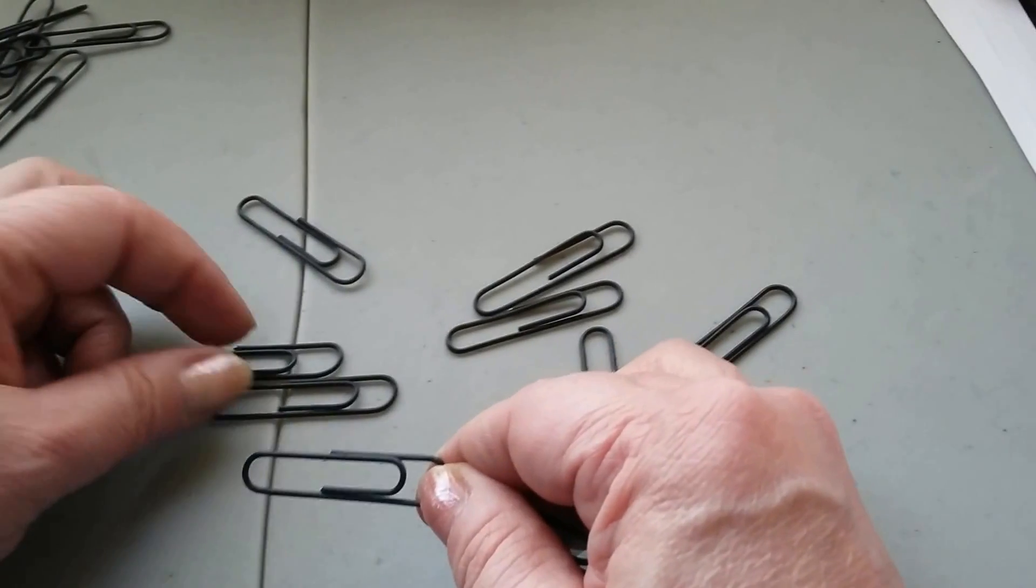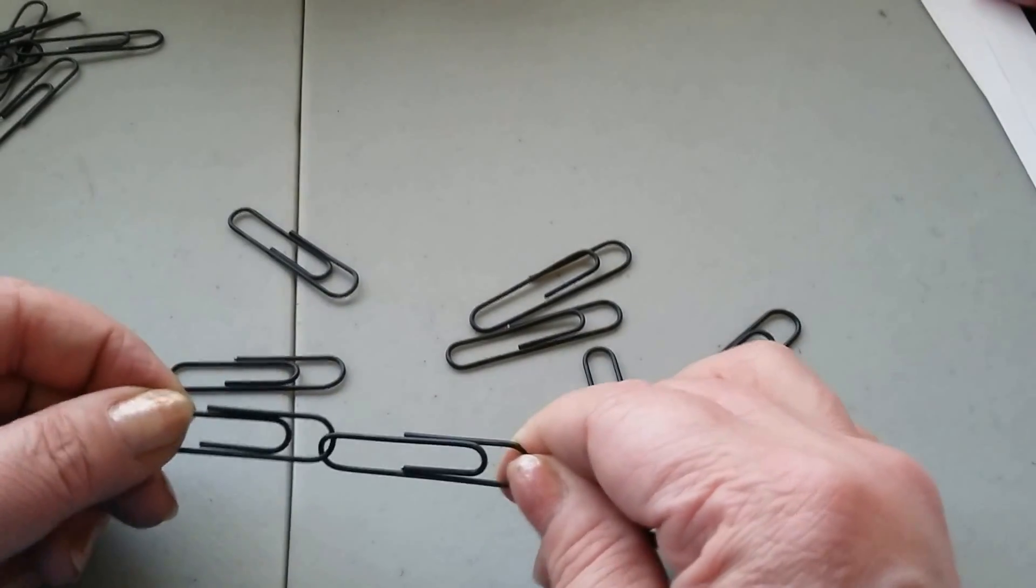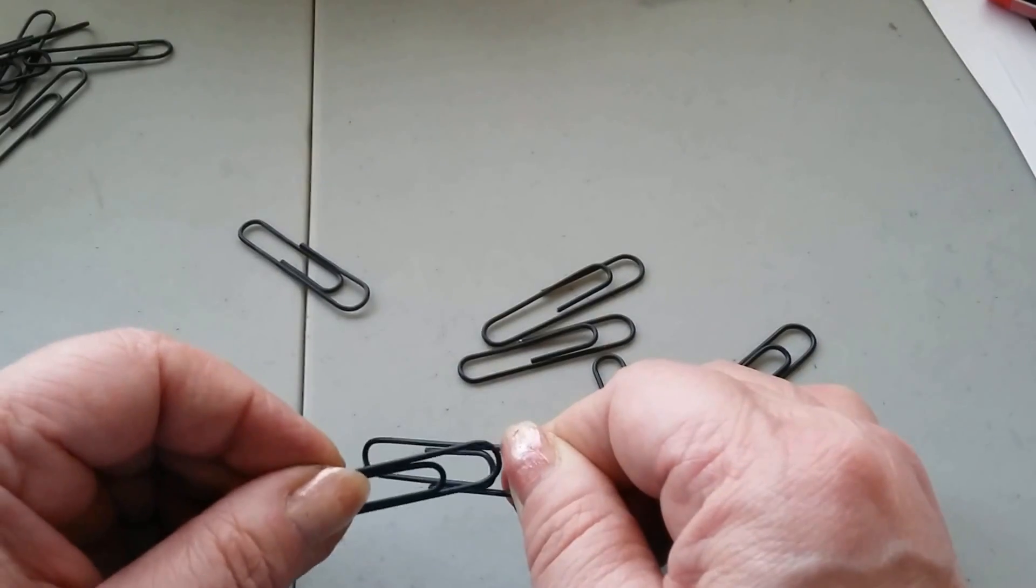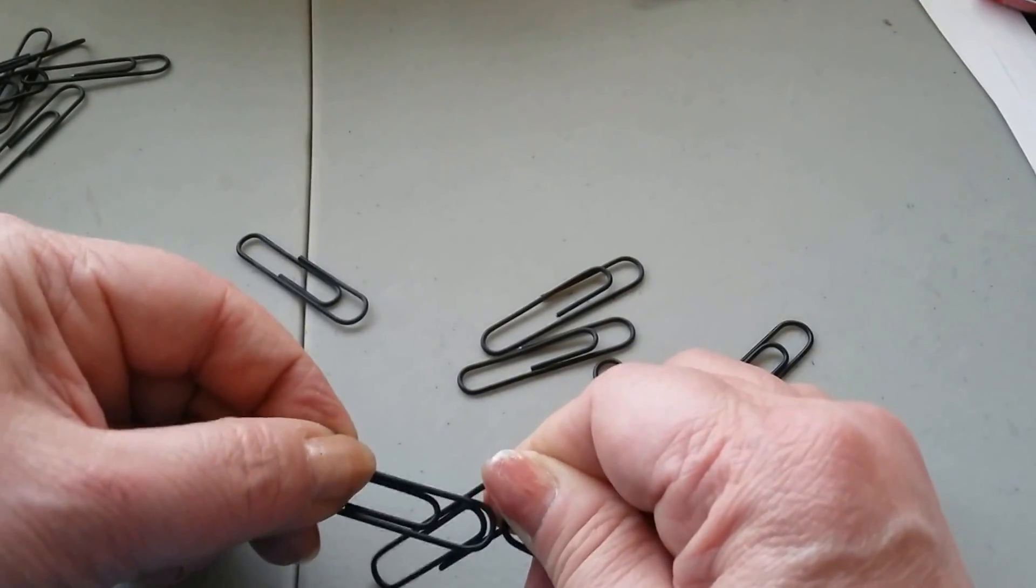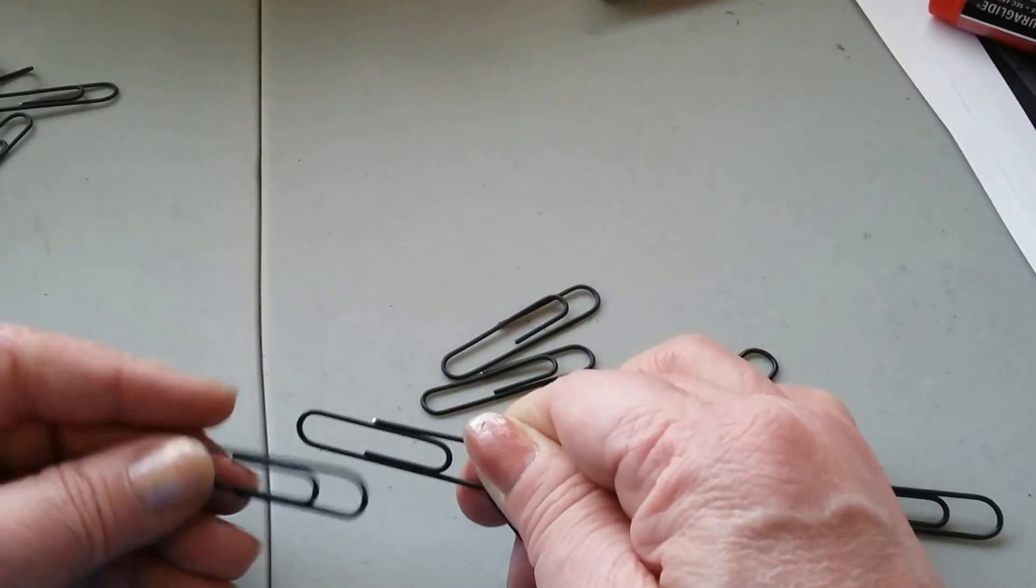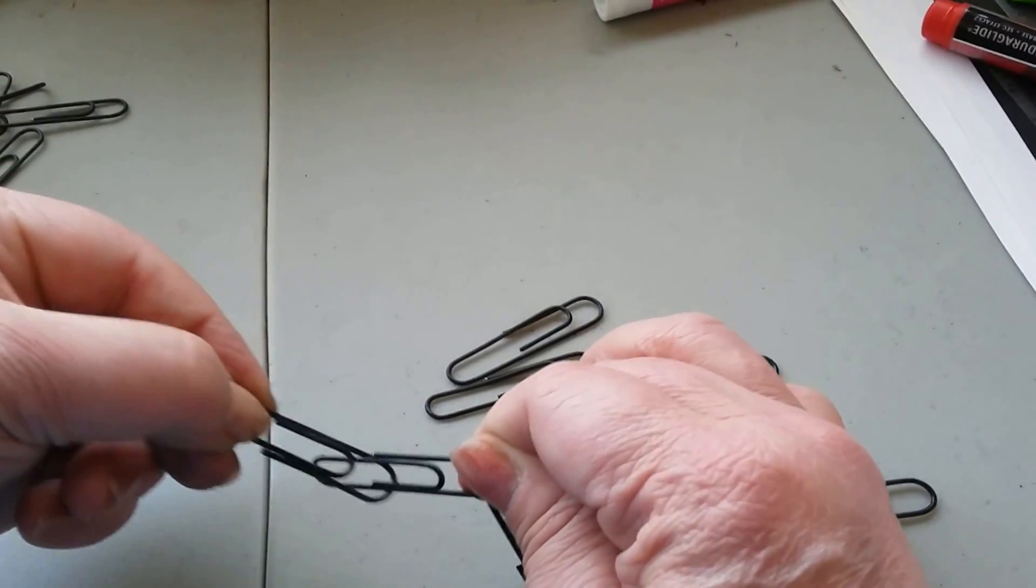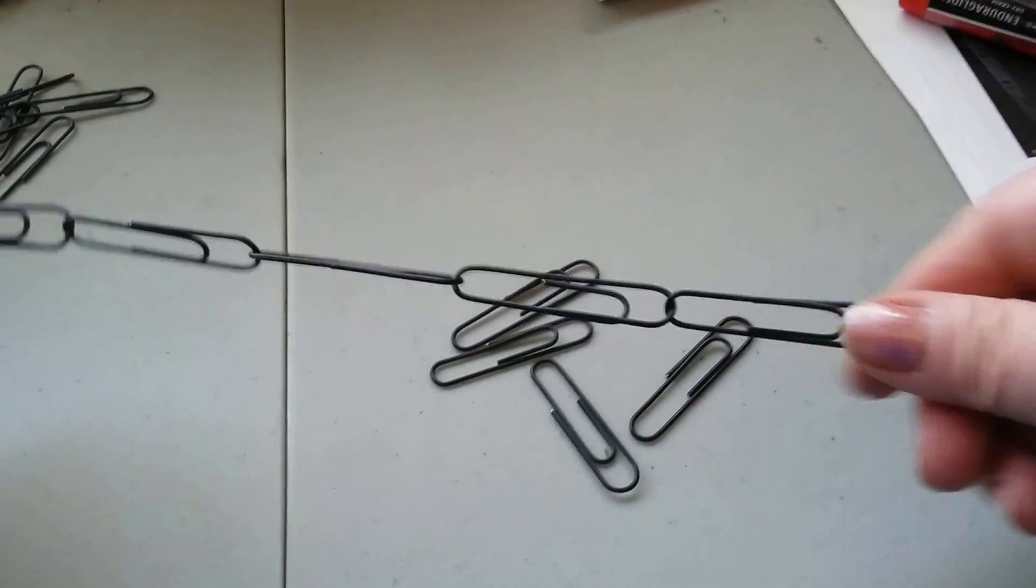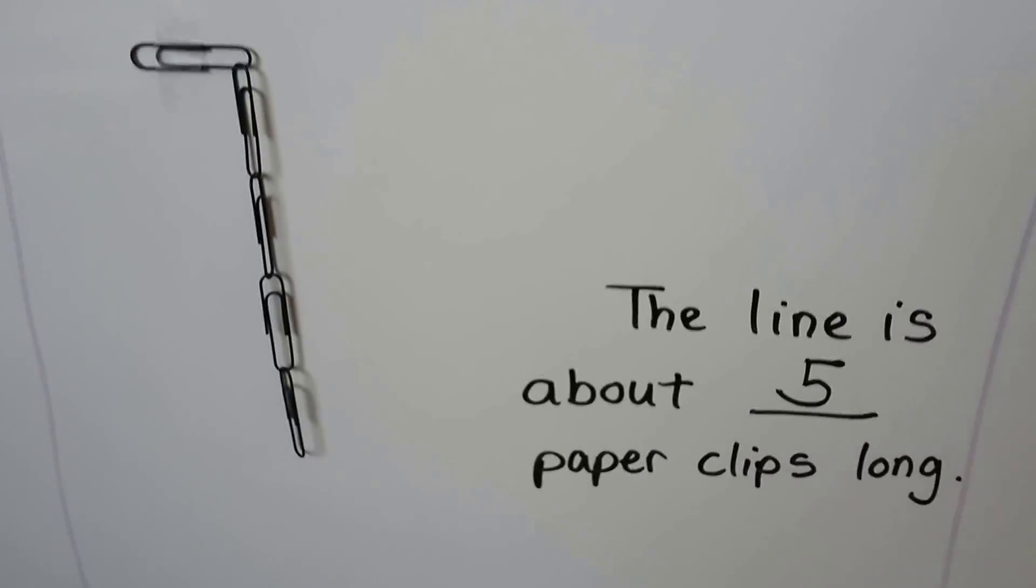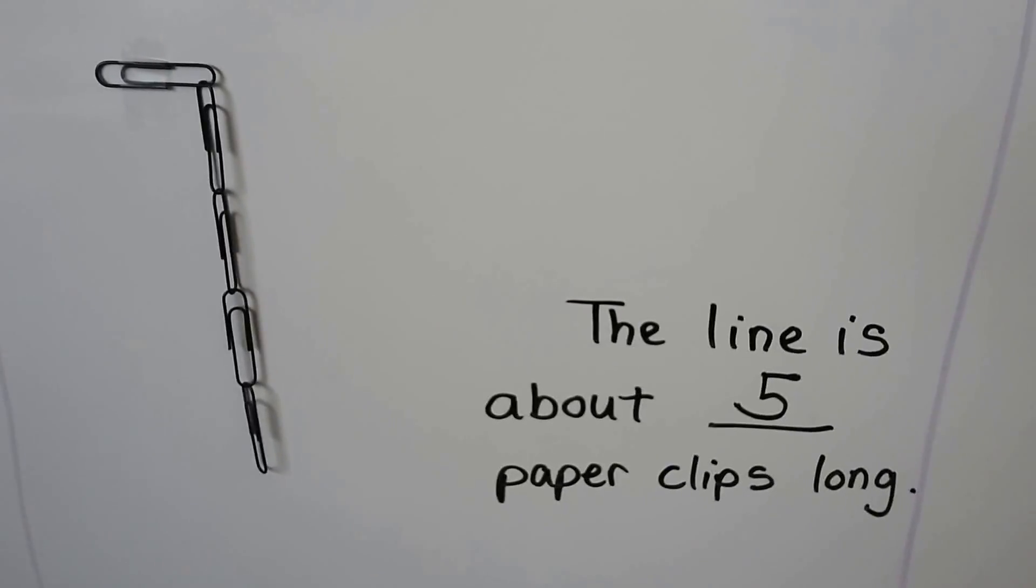See this bump right here? You take a paper clip and you just loop it on like that. Let's do it again. You take the paper clip, you put it right there and just stick it on. Let's do it again. You take the paper clip, you loop it into this curve and just pull and you can make a very long paper clip chain. Then you can measure things with your long non-standard paper clip measuring tool.